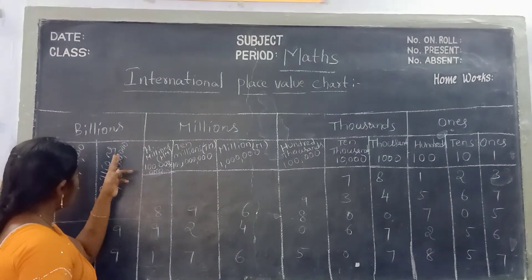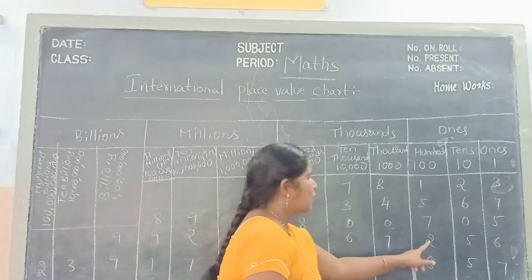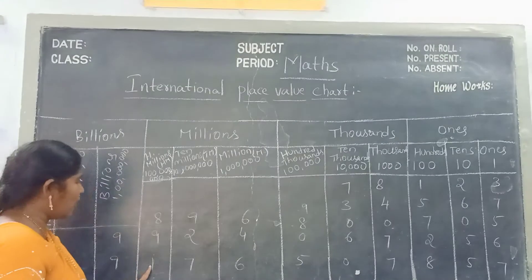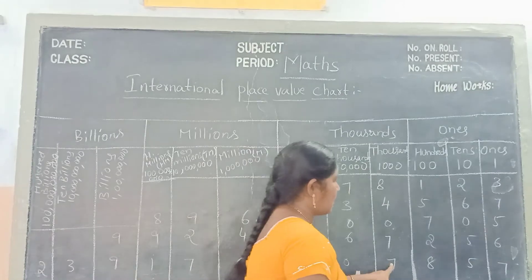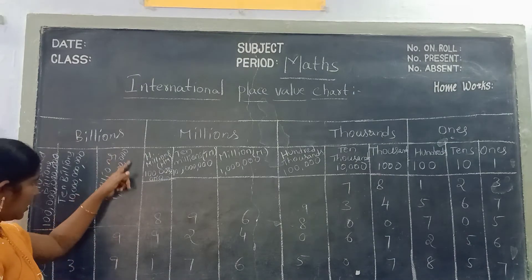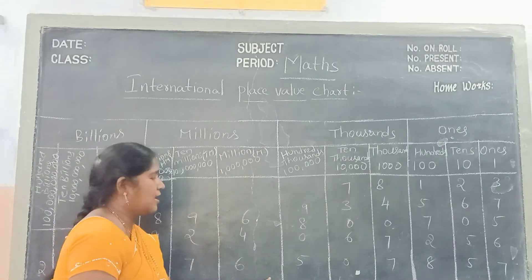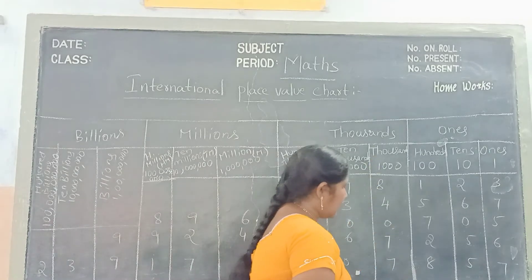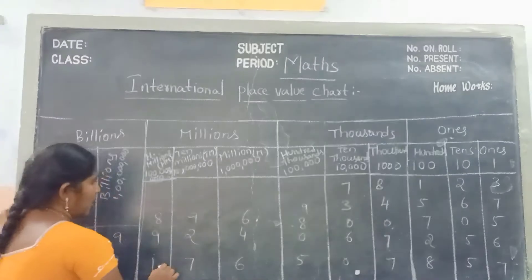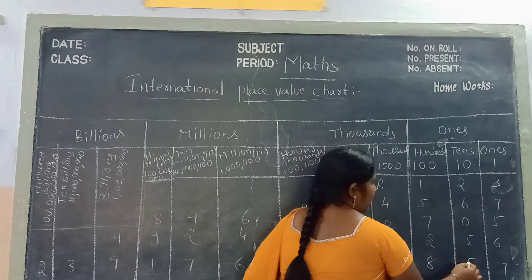See children, how to read this one: nine hundred and twenty-four million, sixty-seven thousand, two hundred and fifty-six. And next number, see children: 2, 3, 9, 1, 7, 6, 5, 0, 7, 8, 5, 7.